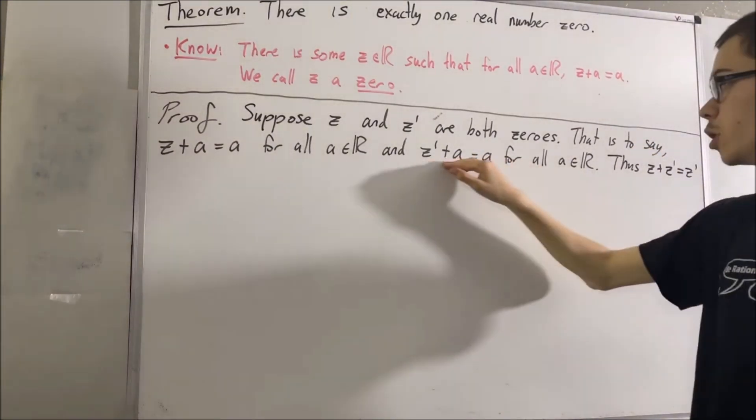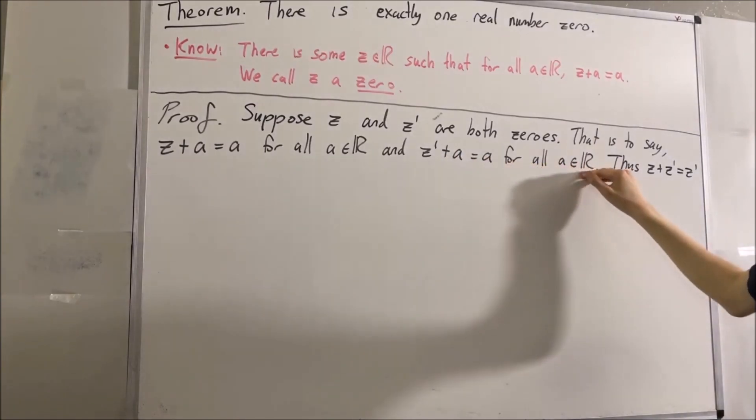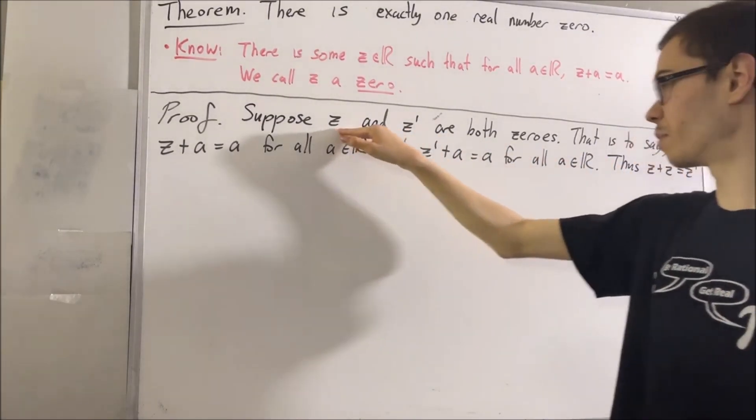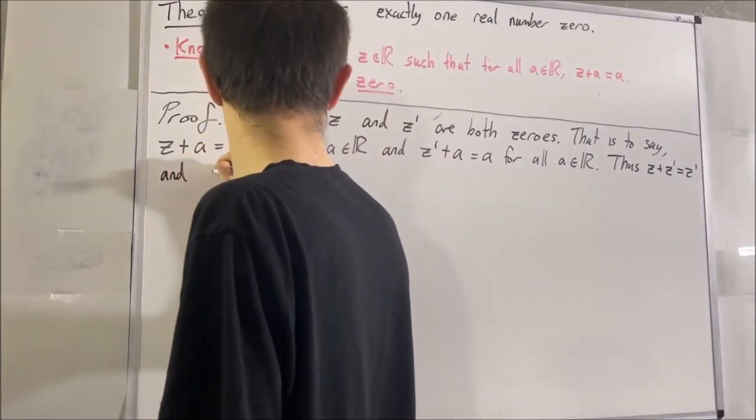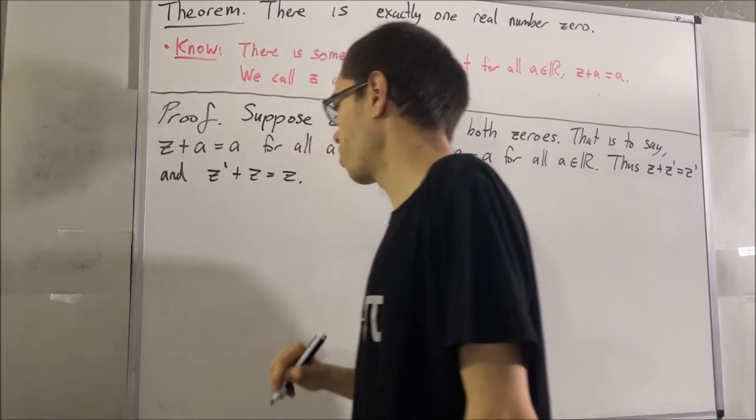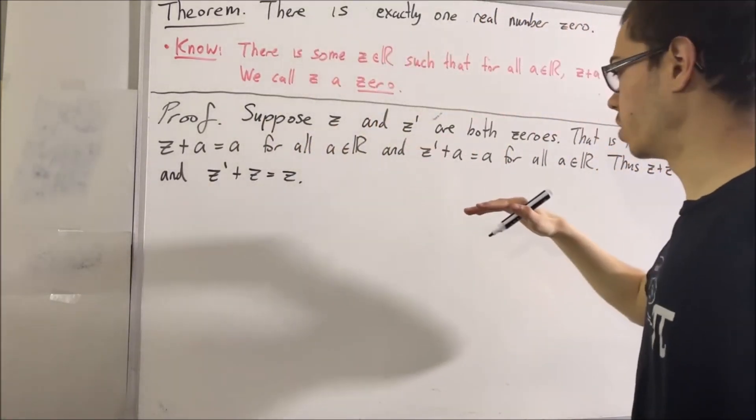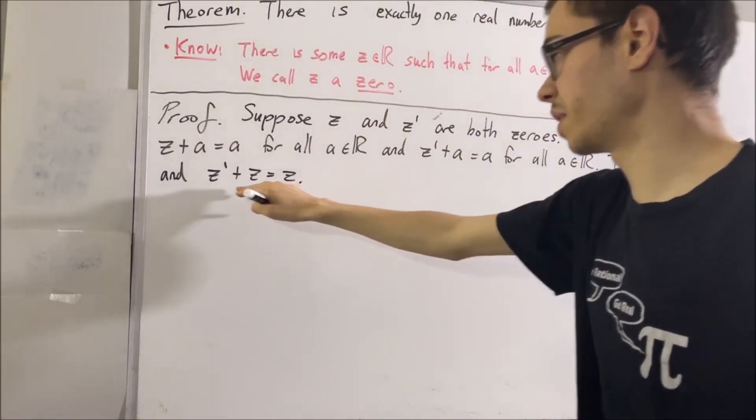Also, we know that this equation holds for every real number. So since z is a real number, it must hold for z. So we have that z prime plus z is equal to z. So now putting this together, we see that z is equal to z prime plus z.